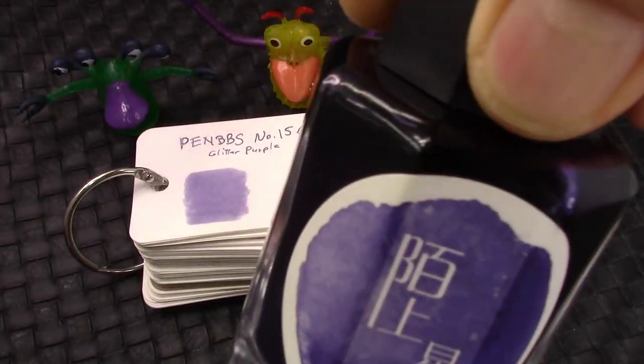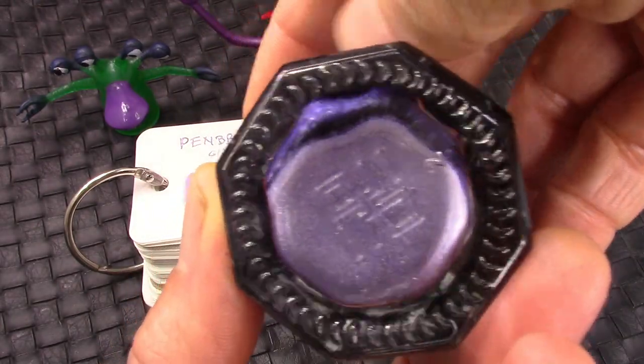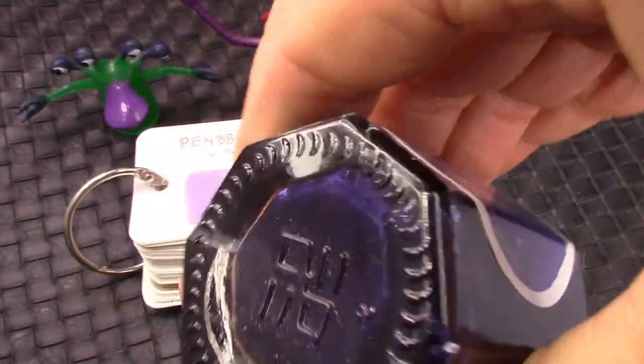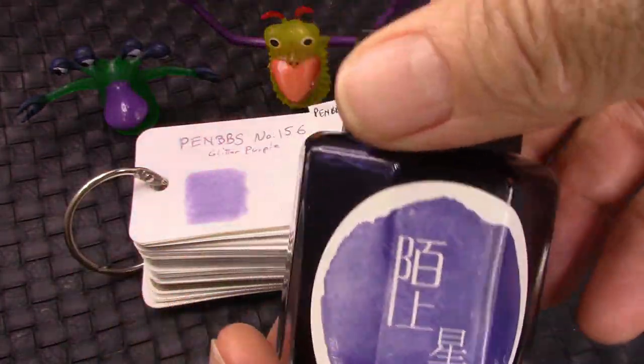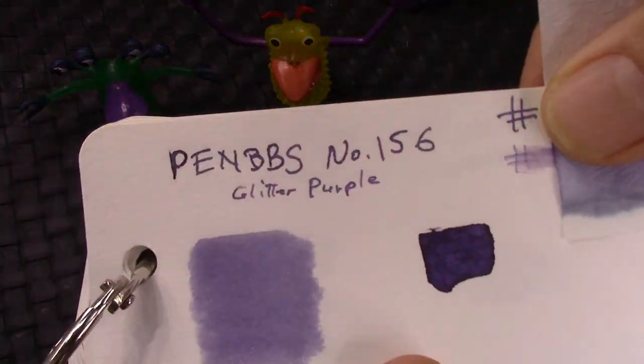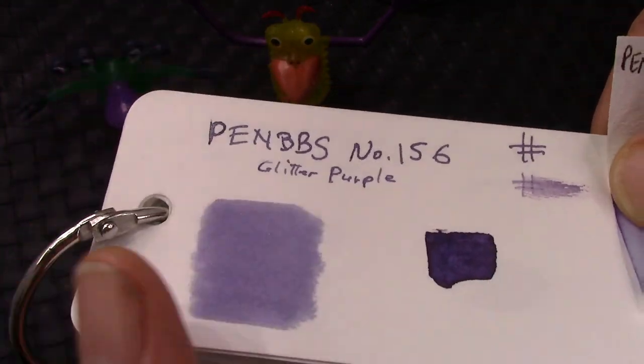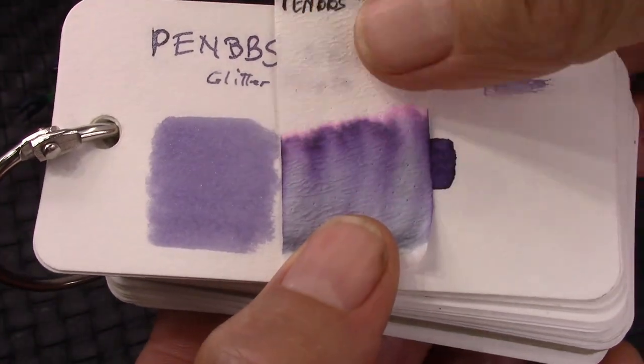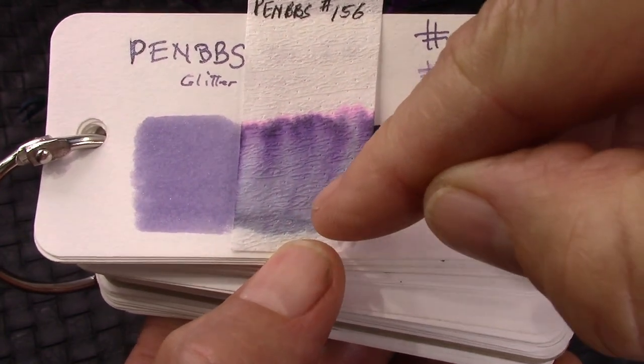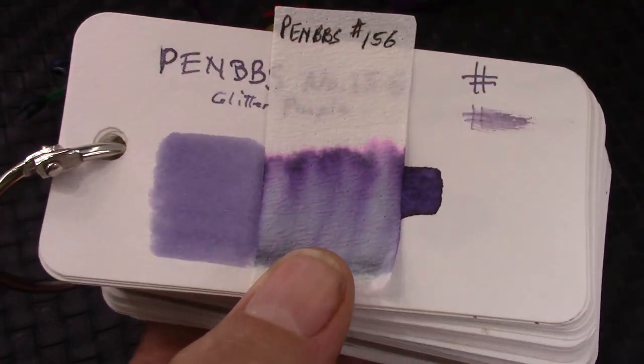So this ink called out to me. It's a Pen BBS ink. It does have glitter in it, which goes into suspension very easily with a little bit of shaking. It's a very fine glitter, which is great. I expect it will work nice in that extra fine nib. Here's the color card. You might be able to see some of the glitter there. It's not over the top glitter. It's very subtle. And the chromatography shows a little bit of glitter here at the bottom. And it's a pretty clean purple color. Let's see how it writes.